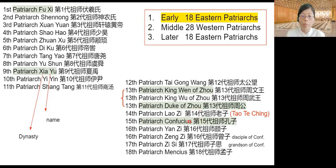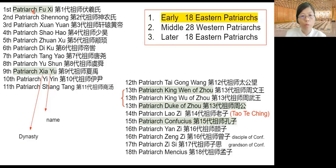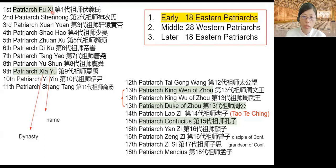Confucius played a very, very big role in annotating Yijing. Today we will focus on Fuxi, and also a little on Patriarch Xia Yu, because he is the one who discovered the marking on the turtle, while Fuxi discovered the marking on the horse.